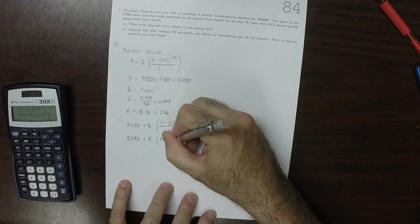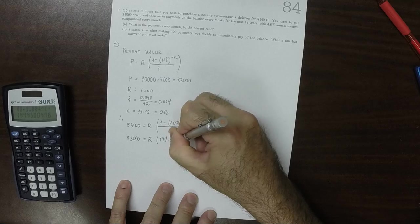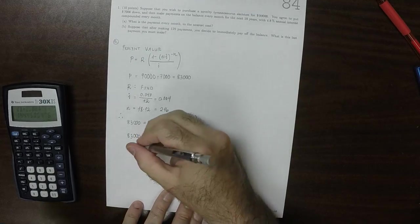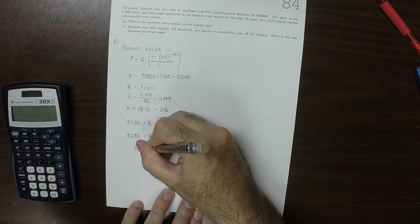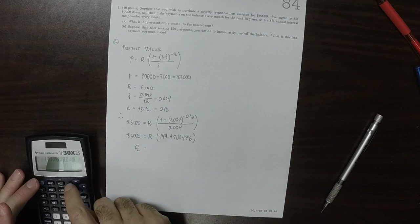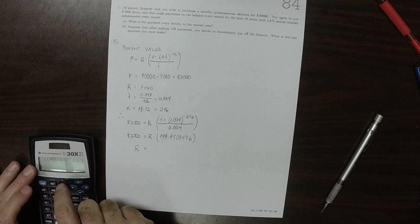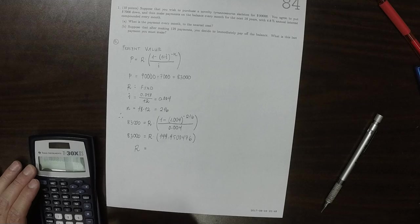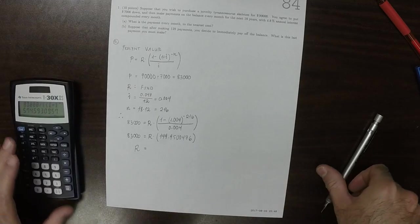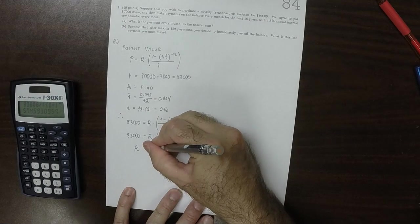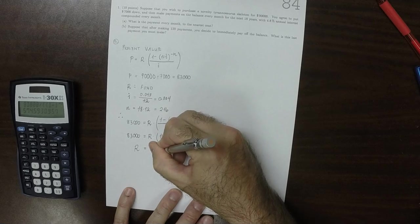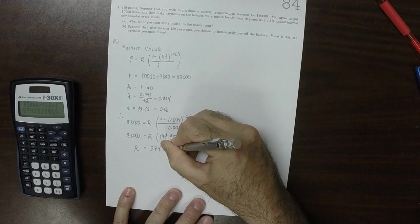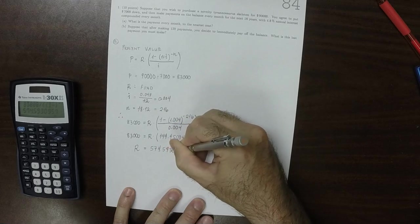So 83,000 is R multiplied by 144.45476. So R can be obtained by performing that division. So the recurring payment is $574.5930957.